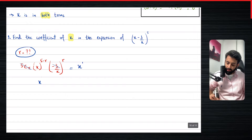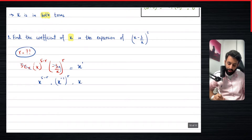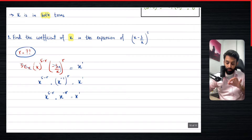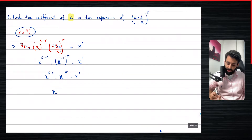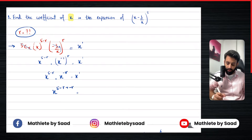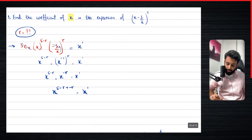Using rules of indices, we take x to the power (5 − r) and move the x from the denominator to the numerator, so it becomes x to the power −1, still raised to the power r. We set this equal to x to the power 1, since we want the coefficient of x. So we have x^(5−r) multiplied by x^(−r) equals x^1. Since the bases are the same, we add the powers: 5 − r + (−r) equals 1, giving us 5 − 2r = 1.